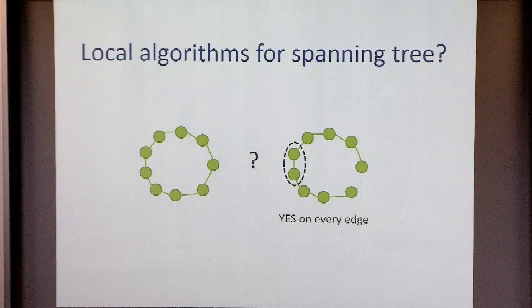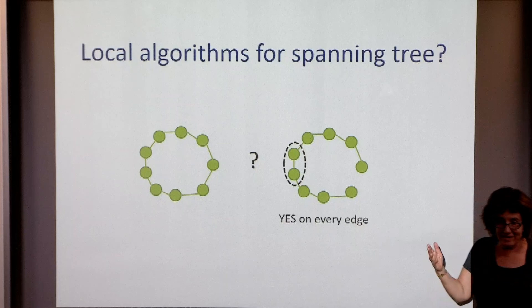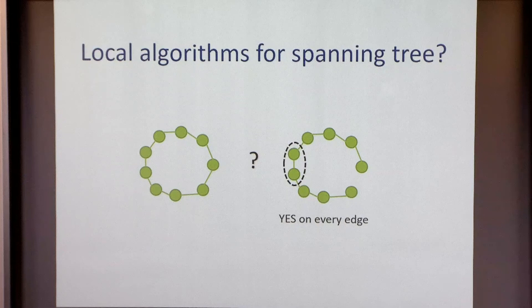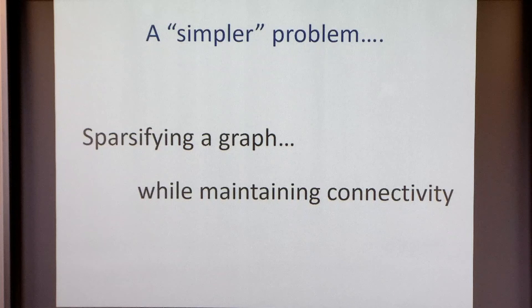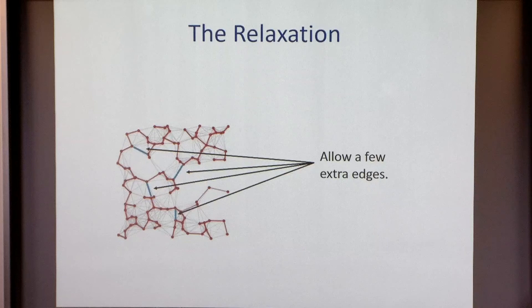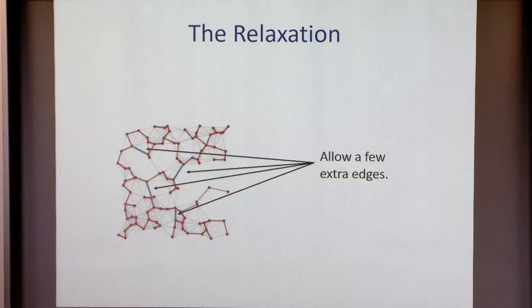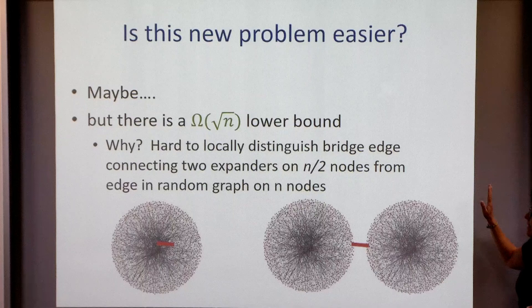For spanning trees: given a graph, identifying edges in some spanning tree has an Omega(n) lower bound in general. But you can find sparse spanning trees — connected subgraphs with at most (1+epsilon)n edges — for special cases. There's a lower bound of sqrt(n) for general graphs. For hyperfinite graphs and non-expanding graphs, you can get constant in n and quasi-poly in degree. For nice expanding graphs, you can get near sqrt(n), close to the lower bound.